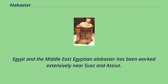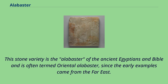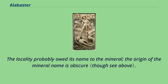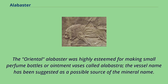Egyptian alabaster has been worked extensively near Suez and Ashen. This stone variety is the alabaster of the ancient Egyptians and the Bible, and is often termed Oriental alabaster, since the early examples came from the Far East. The Greek name alabasterites is said to be derived from the town of Alabastron in Egypt, where the stone was quarried. The Oriental alabaster was highly esteemed for making small perfume bottles or ointment vases called alabastra, and the vessel name has been suggested as a possible source of the mineral name.